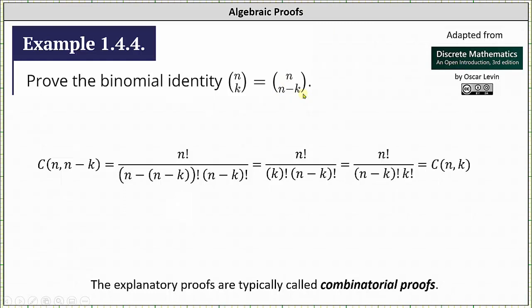For the algebraic proof, if we apply the factorial definition for n choose n minus k, we have n factorial divided by the product of n minus the quantity n minus k factorial and n minus k factorial.